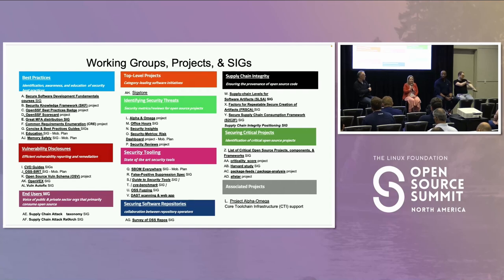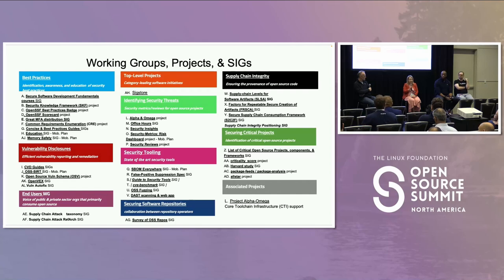If you think of it in terms of SBOMs being the ingredients list, you can think of SALSA as the food handling guidelines around the pipeline. It's that evidence seal to show that it's tamper-proof, to verify who the creator was with that stamp of approval. And you can also use it to help verify the provenance of the metadata.